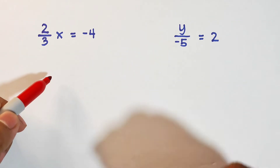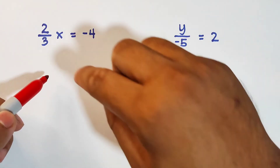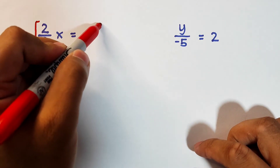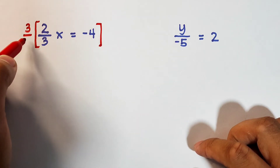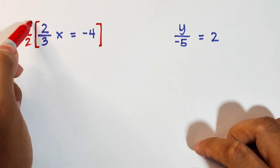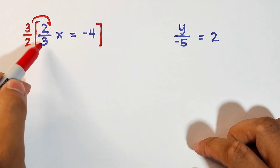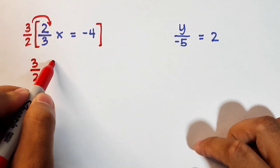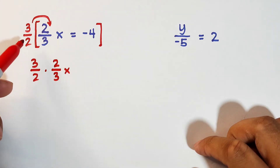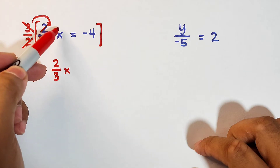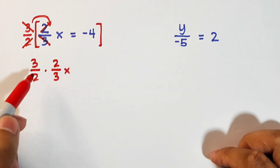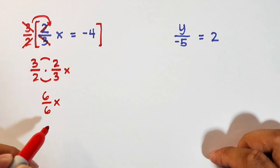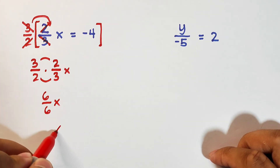The reciprocal — yung reciprocal natin is pagpapalitin mo lang yung numerator — you interchange the numerator and denominator. So we multiply the whole equation by its reciprocal, 3 over 2. When you multiply: 3 over 2 times 2 over 3 times x — you cancel the 2s and cancel the 3s, and what will remain is x. The process is: 3 times 2 is 6, 2 times 3 is also 6, giving 6 over 6 times x, which equals 1 times x. So what will remain is simply x.